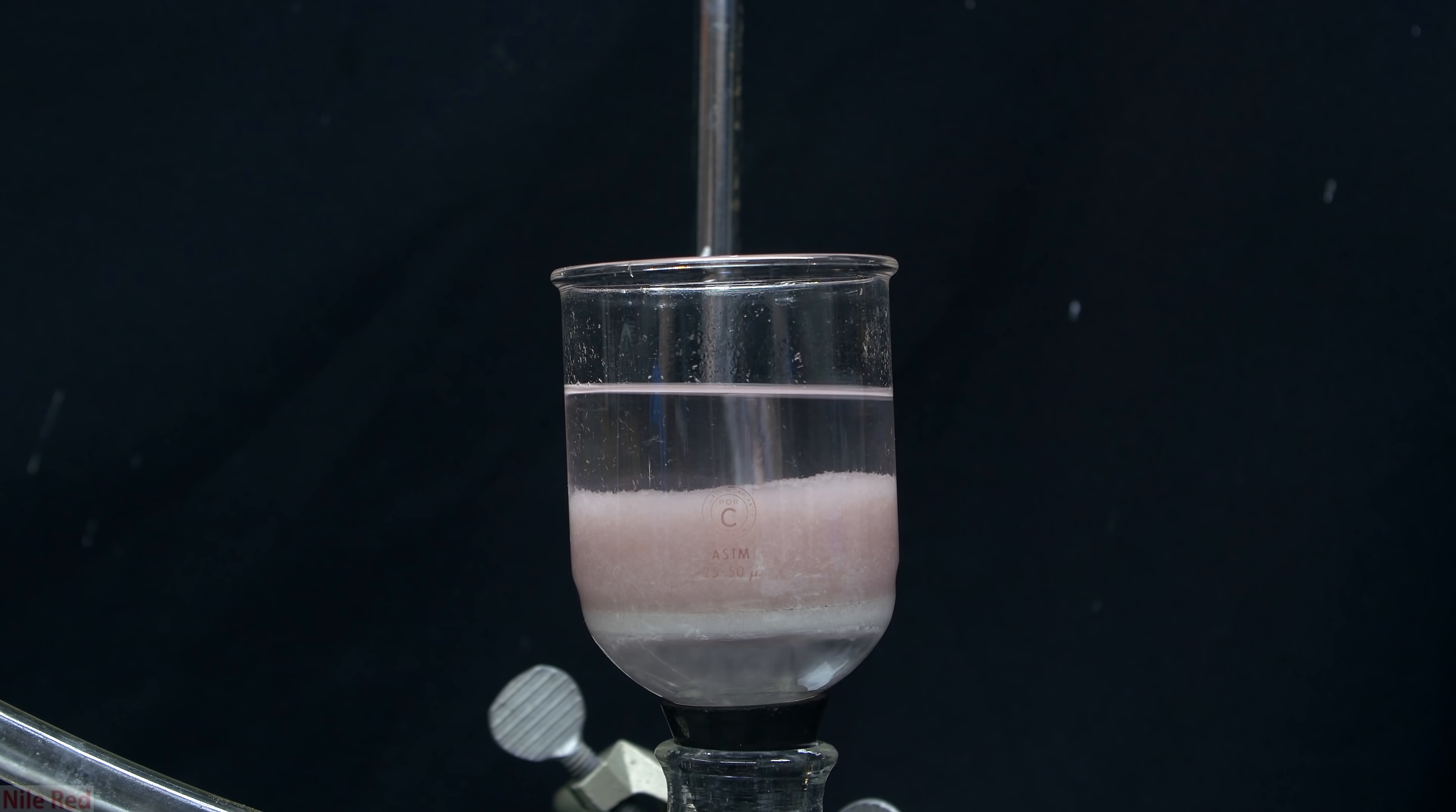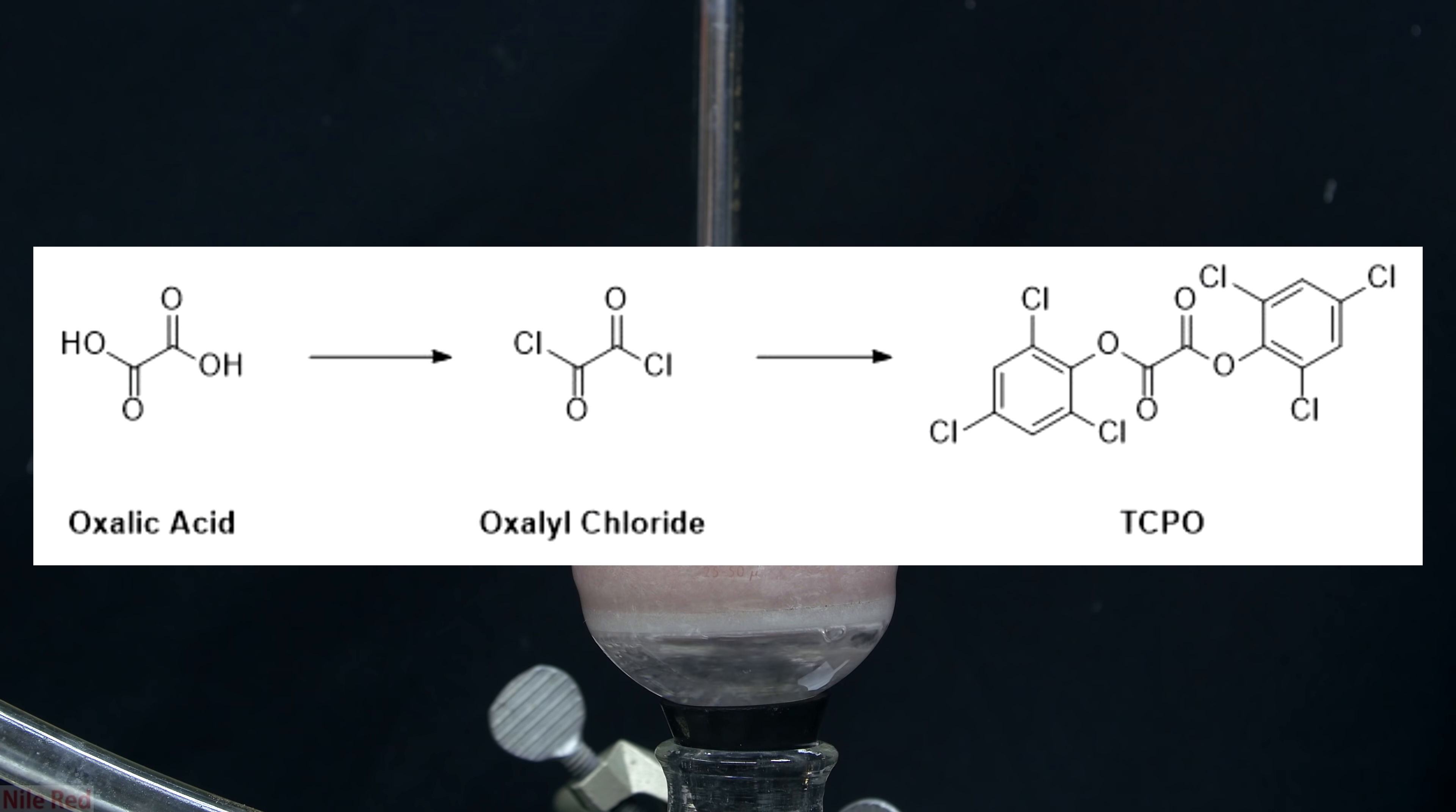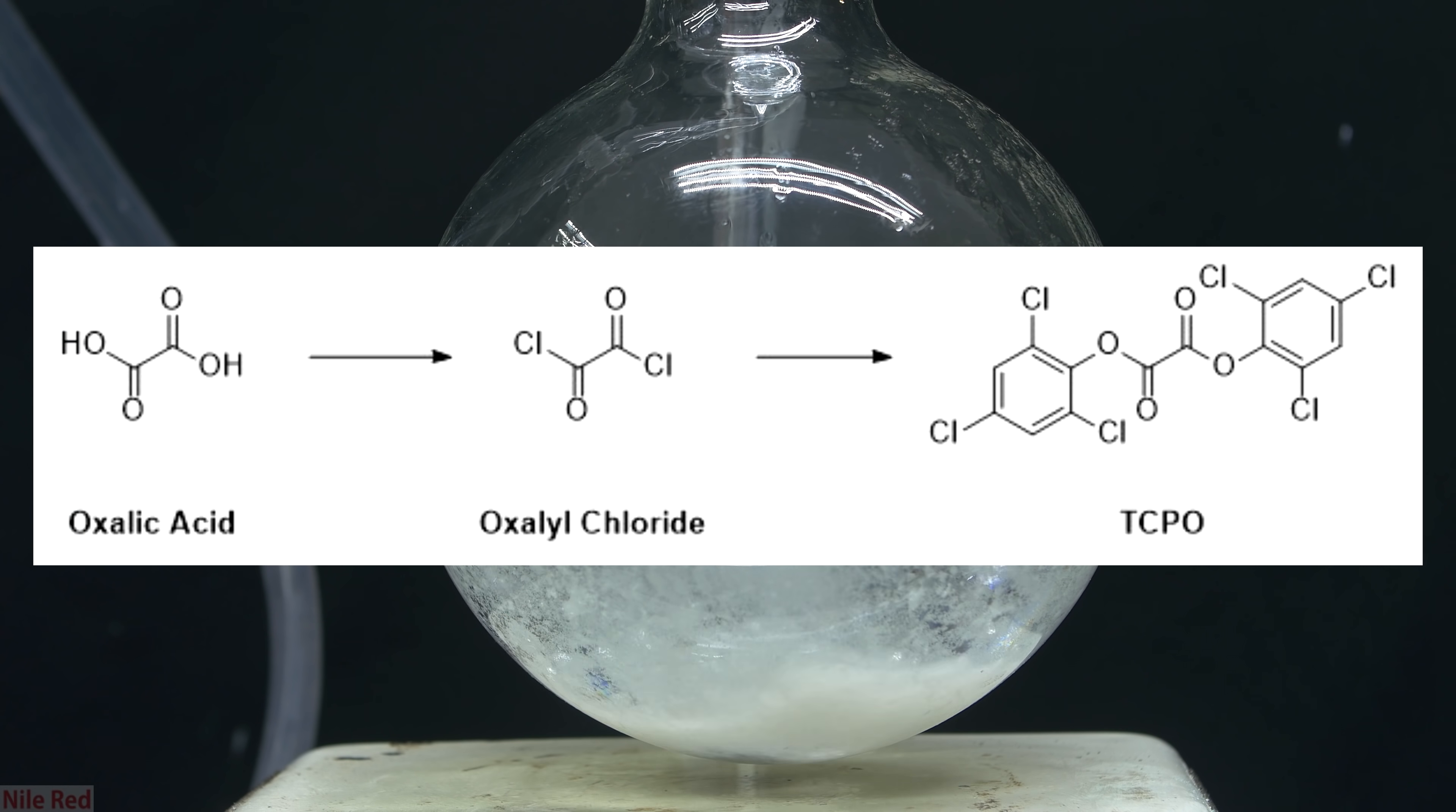For most applications, the hydrated oxalic acid is perfectly fine, but I want to make some oxalyl chloride, and to do this, I need everything to be perfectly dry. Once I make the oxalyl chloride, I can make something called TCPO, which is basically the chemical in glow sticks that allows them to glow.